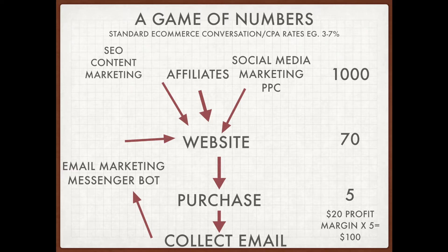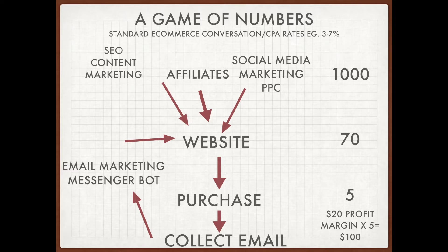These are conservative estimates. For example, at a seven percent conversion rate, at every step of the funnel there's a 93% attrition rate. If I'm driving 1,000 people through the first layer with a 93% attrition rate — seven percent CPA — I'd expect only 70 people to move onto the website. Of those 70 people, only seven percent would go to the purchase step, so I'm expecting about five people to buy.